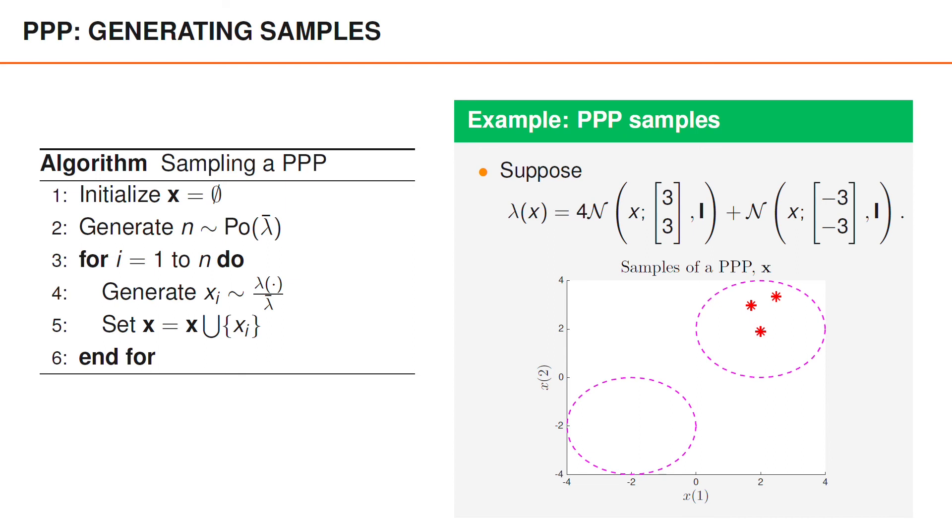If we normalize the intensity function, we obtain the spatial pdf, and we can see that the samples have an 80 percent probability of being gaussian with mean 3,3 and a 20 percent probability of being gaussian with mean minus 3 comma minus 3. To generate a sample from this spatial distribution, we first randomly select which gaussian density to draw our sample from and then generate the sample from that gaussian.